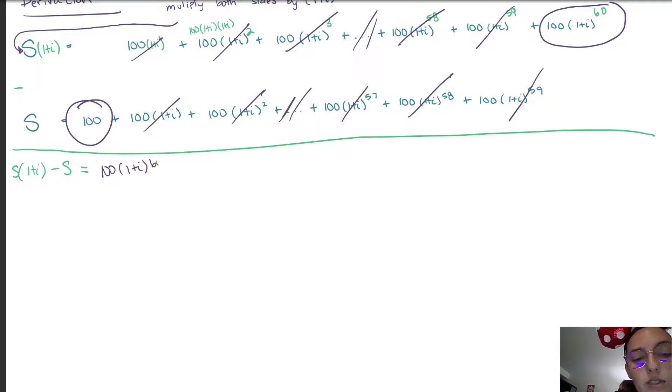So in the end we have two terms left over and we're subtracting the top equation from the bottom, so we'll have 100 times 1 plus I to the 60 minus 100. And for those of you who have taken calculus 2 or algebra 2 and we saw geometric structures, this pattern should make sense because in geometric sums we're looking at like final minus initial.